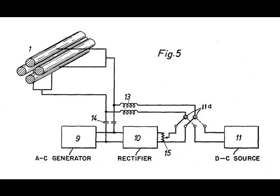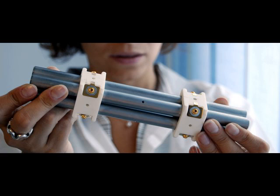The quadrupole consists of four parallel metal rods. Each opposing rod pair is connected together electrically, and a radiofrequency (RF) voltage is applied between one pair of rods and the other. A direct current voltage is then superimposed on the RF voltage. Ions travel down the quadrupole between the rods, and only ions of a certain mass-to-charge (m/z) ratio will reach the detector for a given ratio of voltages.